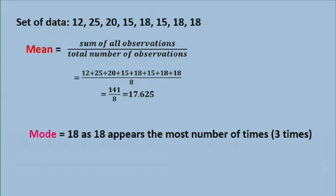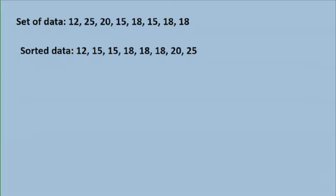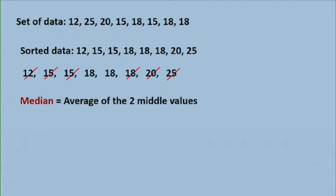Now to find the mode, we can see that the number 18 appears three times. So the mode here is 18. Now to find the median, I need to rearrange the data given. So I sort the data in ascending order. And we proceed as before. I cancel 12, 25, 15, 20, 15, 18. So I had eight observations, an even number of observations. So the median will be the average of the two middle values. That is 18 + 18 over 2, which is 18.